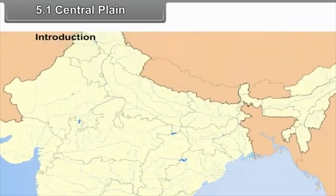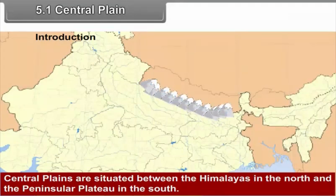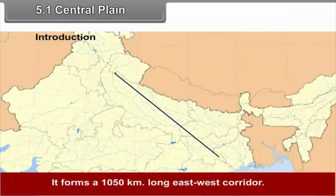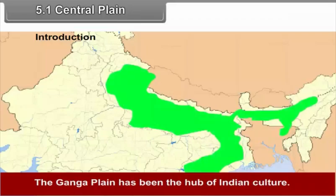5.1 Central Plain — Introduction. Central Plains are situated between the Himalayas in the north and the Peninsular Plateau in the south. It forms a 1050 km long east-west corridor. The plain is broad in the west and narrow towards the east. The Ganga Plain has been the hub of Indian culture.